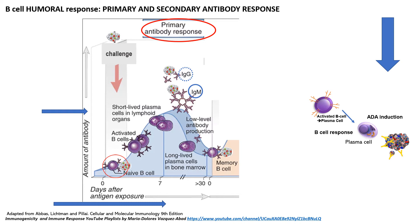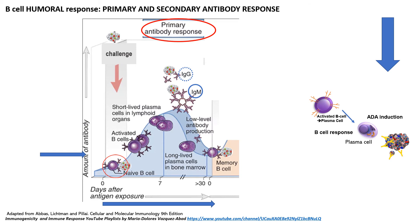If you want to look at the isotype switch video, I'm also adding a link to that video. What happens over time, if the individual is not exposed to that same danger signal, is that the titers of antibodies will go down. This is because there are some long-lived plasma cells in the bone marrow that were triggered by the same initial danger signal. In time, if there's no further exposure to the danger signal, they will eventually disappear and the titers will go back to zero. That is the primary antibody response.